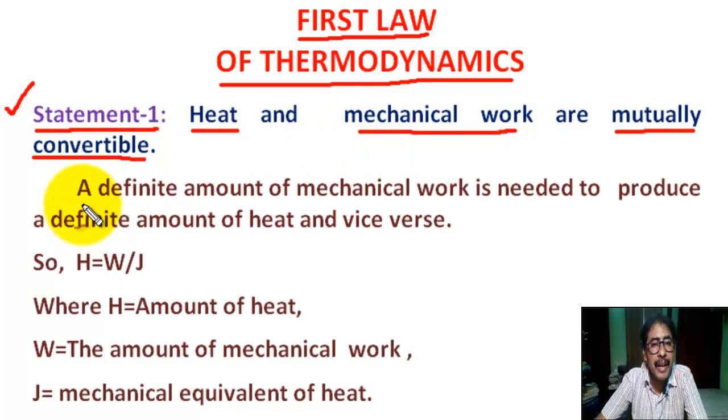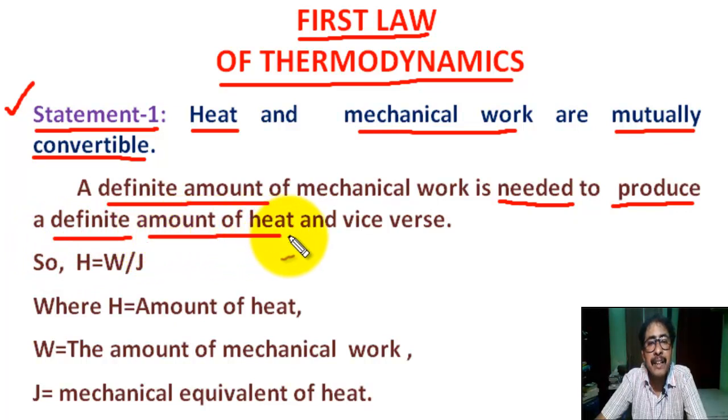A definite amount of mechanical work is needed to produce a definite amount of heat and vice versa. So H equals W by J, where capital H equals amount of heat, capital W equals the amount of mechanical work, and J equals mechanical equivalent of heat.